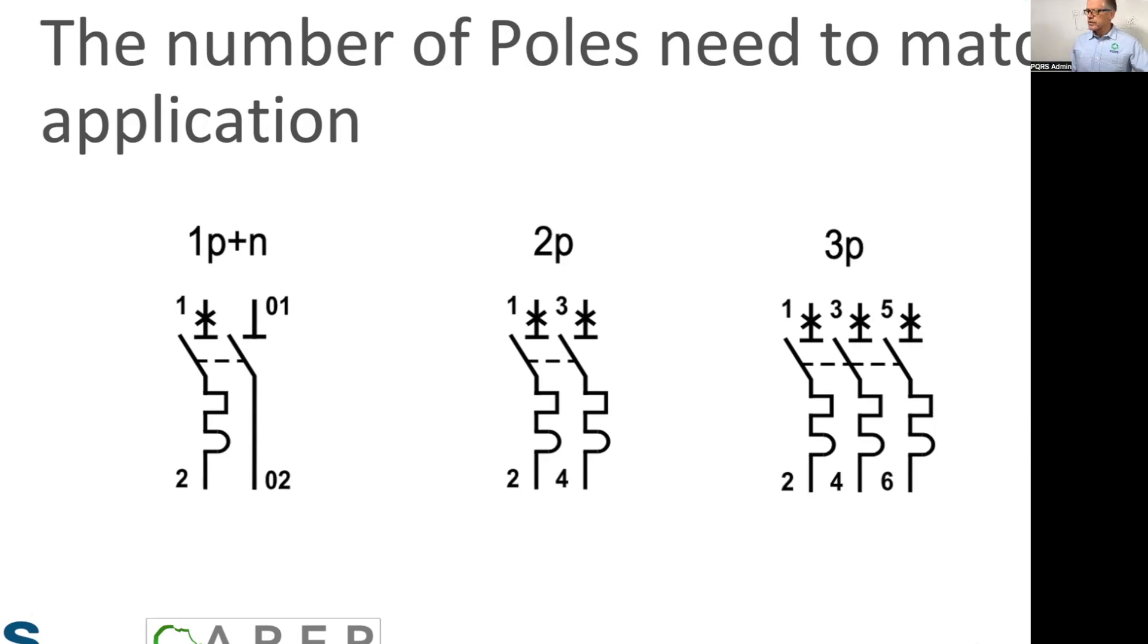But all this is telling us is that you would fit your live on 1 and 2, and you would fit your neutral on O1 and O2. The dash line in between means that the toggle is connected, and if the one trips, the other one is going to trip.